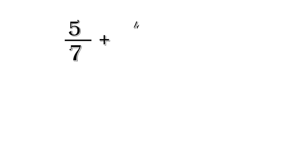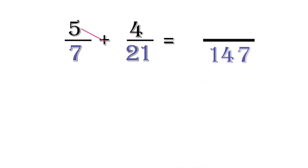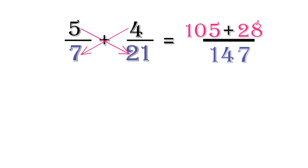For example, if we have a question like 5 over 7 plus 4 over 21, we can use the cross multiplication method. Let's go through it quickly. We'll first multiply the 7 by the 21, which gives us 147. Next, we multiply 5 by 21 to get 105. We'll then multiply 7 by 4 to get 28. We add the 28 to 105, which gives us 133 over 147.